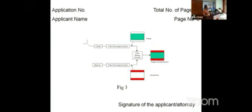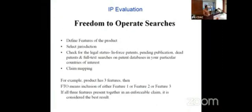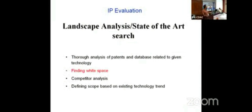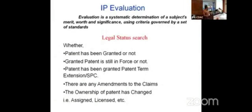You need any number of figures, with the total number of pages and page number on the top right side, along with the application number and applicant name. If someone tells you your patent is being infringed, you need to take action. IP evaluation is also important — you need to do a legal status search: whether the patent has been abandoned, whether it is in force, whether ownership has changed. Freedom-to-operate searches are part of qualitative analysis.